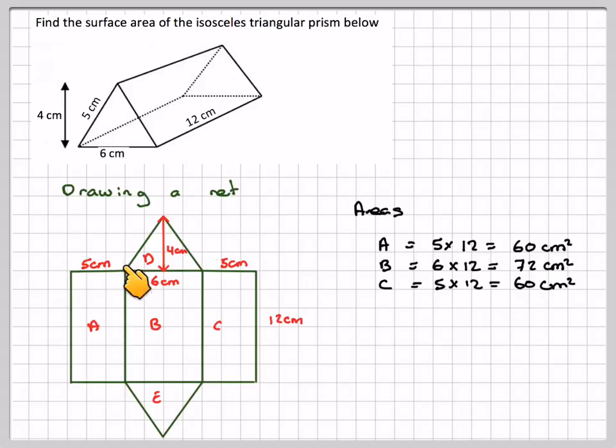Here we have a triangle. The area of the triangle is half base times height, so it's going to be 0.5 times 6 times 4, which is 12 centimetres squared. And E is going to be 0.5 times 6 times 4, which again is 12 centimetres squared.